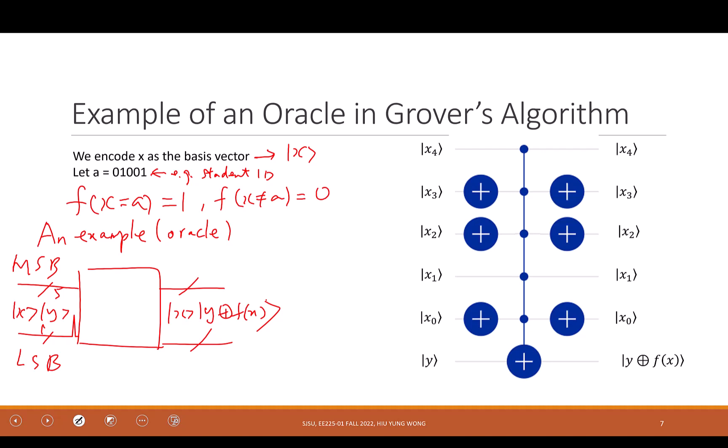Let me show you a possible circuit. This is what you need to do in your homework and project — create your own oracle. Now I want to tell you this is the correct oracle. My MSB is on the top — I put X4 at the top. So MSB is X4, LSB is X0.